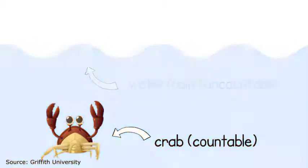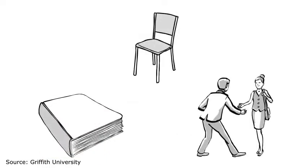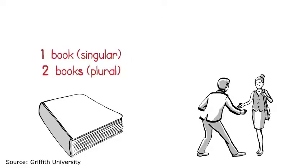So let's start with what you know. Countable nouns refer to things that can be counted, such as books or chairs or people, and they have both singular and plural forms.